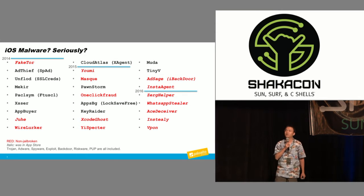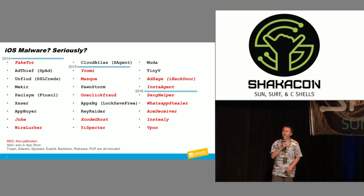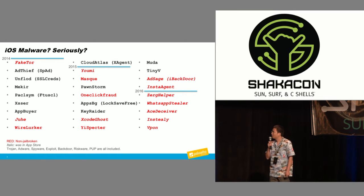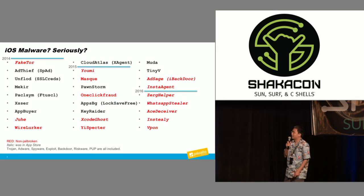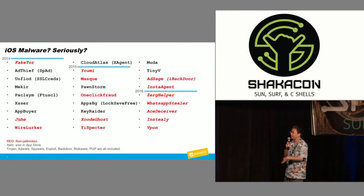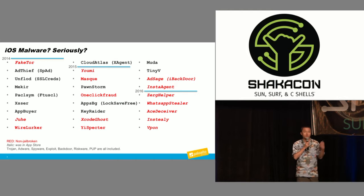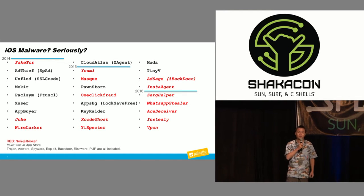The topic is about iOS malware. Some people may think, seriously, are there iOS malware? But over the past three years, this is a whole list of new iOS malware families being discovered. The red ones are malware that affected non-jailbroken devices, and the italic ones are malware that even entered Apple's official App Store. So we could say from this list that this is a problem now.